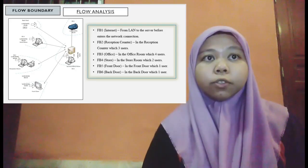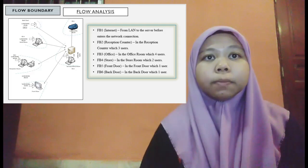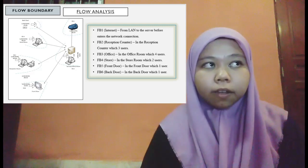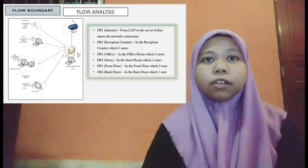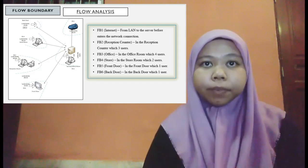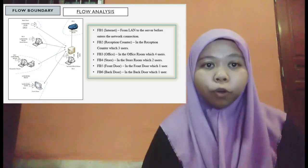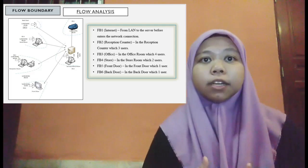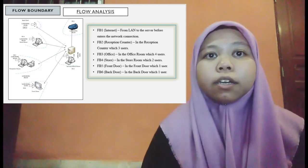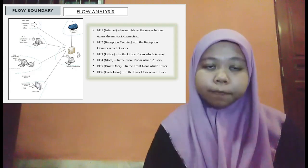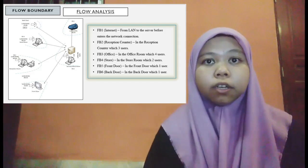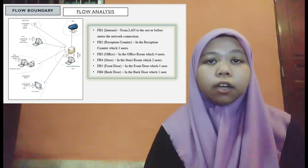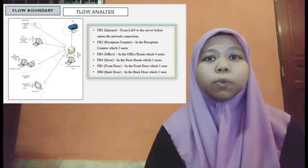Next is the flow boundary section. There will be 6 flow boundaries for One Medic Pharmacy. FB1 is the internet — from LAN to the server before entering the network connection. FB2 is the reception counter, with 3 users. FB3 is the office, with 4 users. FB4 is the storeroom, with 2 users. FB5 is the front door and FB6 is the back door, each with 1 user.